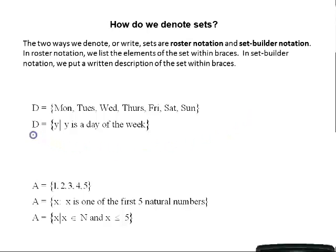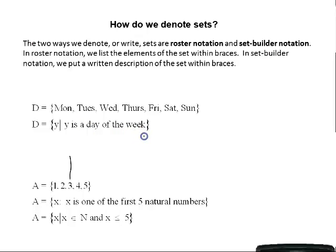The second example is set D in set builder notation. It opens with braces, then you have a variable — a letter — and then either a vertical line or a colon. This is read: the set of all Y such that Y is a day of the week. Monday is a member of set D because Monday is a day of the week, as are Tuesday, Wednesday, Thursday, Friday, Saturday, and Sunday. July would not be a member of set D because July is not a day of the week.